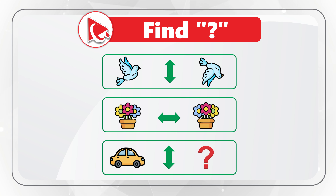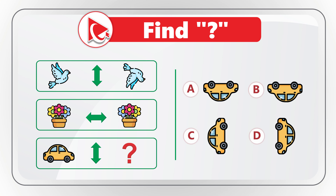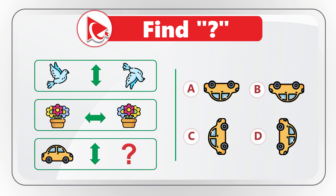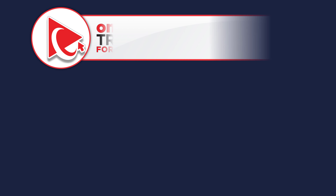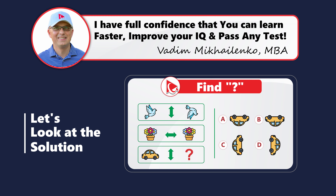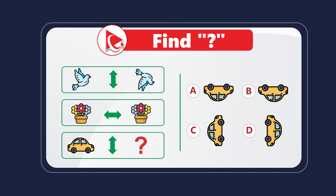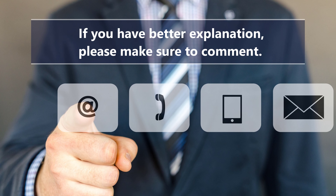You need to select the missing item out of four possible choices: A, B, C, and D. Take a close look to see if you can come up with the solution. If you can't figure it out, consider pausing this video to see if you can get to the answer. Are you ready? I am moving forward to share my version and rationale for the answer. And obviously, if you have a better way to solve it or a better explanation, please make sure to post in comments.